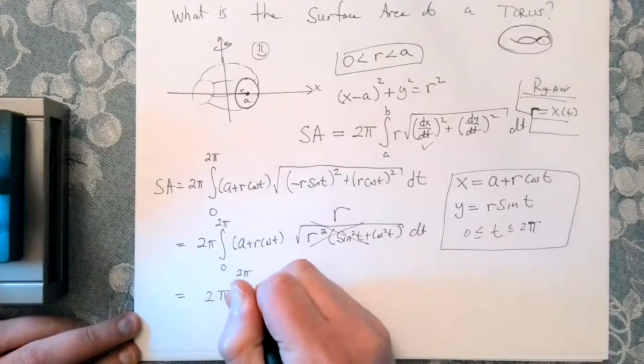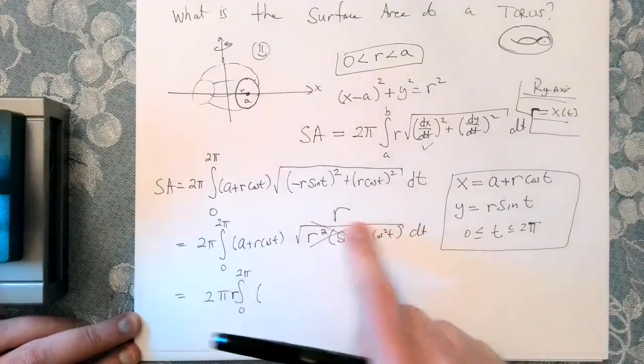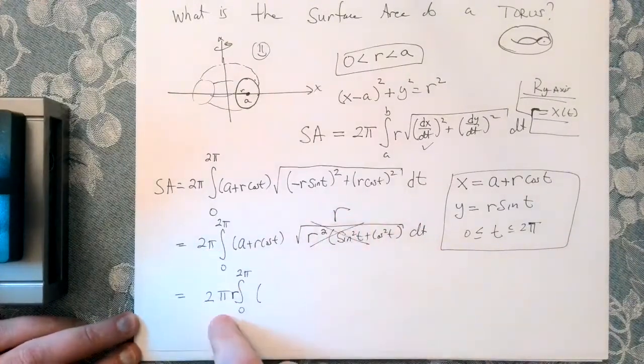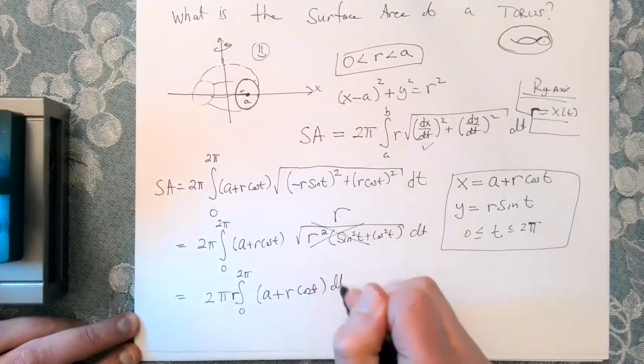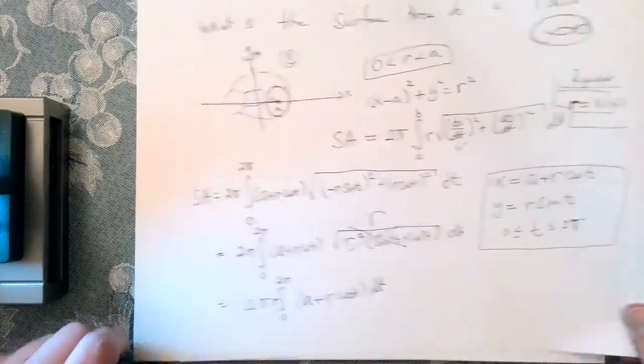I could factor that out in front if I wanted to. That would actually be just fine. In fact, why not? Let's call that 2 pi r. So r is constant in respect to t. So I could factor that out in front of the integral. And so I have a plus r cosine of t dt. And that's not a bad computation to do.